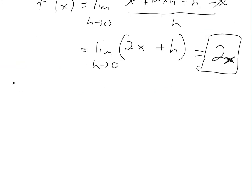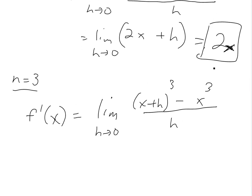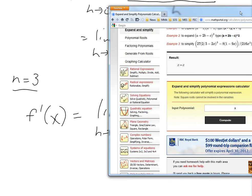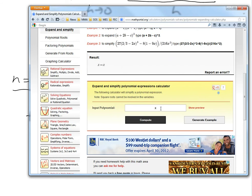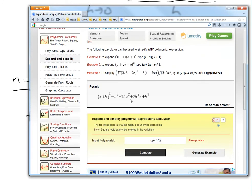If we look at n equals 3, it's going to be similar. So we'll have f'(x) is going to be equal to limit h approaches 0 of (x+h)^3 minus x^3 over h. So now you could expand this one out. I'll show you a quick one. We'll just pull out the calculator here. Here's this website, mathportal.org. It has a pretty sweet calculator here. It's a polynomial expansion calculator. So we'll go (x+h) to the power of 3. Compute.